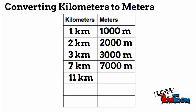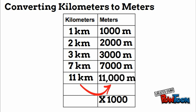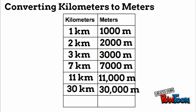Since there are 1,000 meters per kilometer, eleven kilometers multiplied by 1,000 equals 11,000 meters. Thirty kilometers times 1,000 would be 30,000 meters. So anytime we're converting kilometers to meters, we can multiply by 1,000.